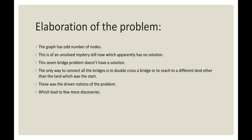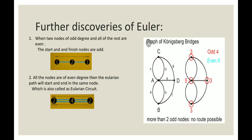By this Euler discovered two laws. The first law of Euler was that when two nodes of odd degree and all the rest are even, the start and finish nodes are odd. Let's look at the example.